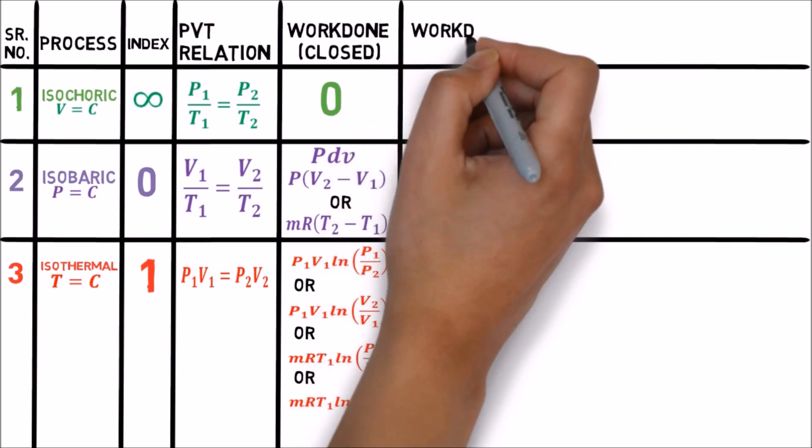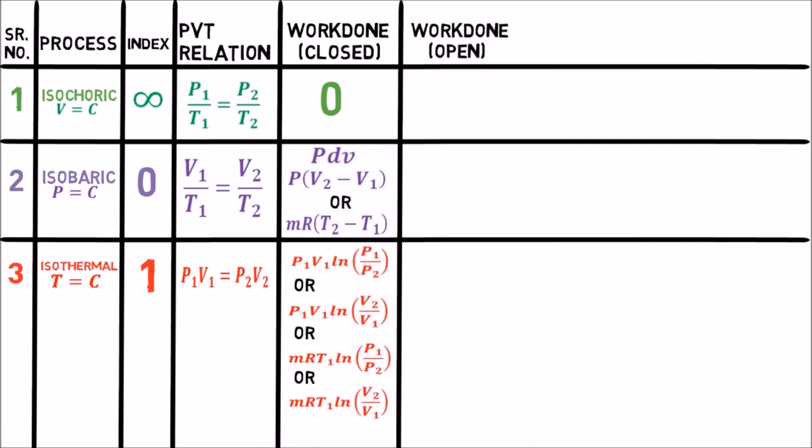Let's see work done formulas for these processes for open systems like gas turbine, air compressor, and air refrigeration cycles. When you draw the pressure vs. volume diagram, the area under the PV diagram with respect to the pressure axis, i.e. y-axis, will represent their work done — that is, integration of minus V dP. The negative sign indicates these systems like gas turbine and compressor require work input, while in closed systems like Otto and Diesel cycles, work is produced, hence positive P dV.